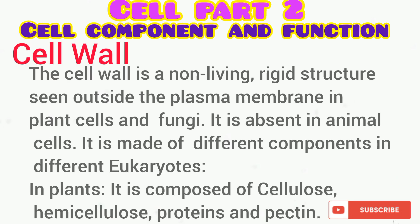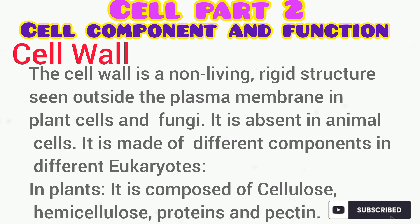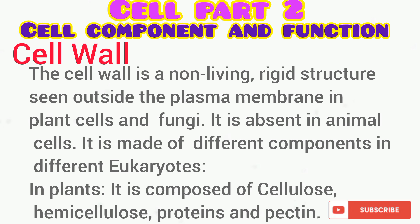So let's start with the cell wall. The cell wall is a non-living rigid structure seen outside the plasma membrane in fungi and in plant cells. It is, however, absent in animal cells, and it is made of different components in different eukaryotic organisms.